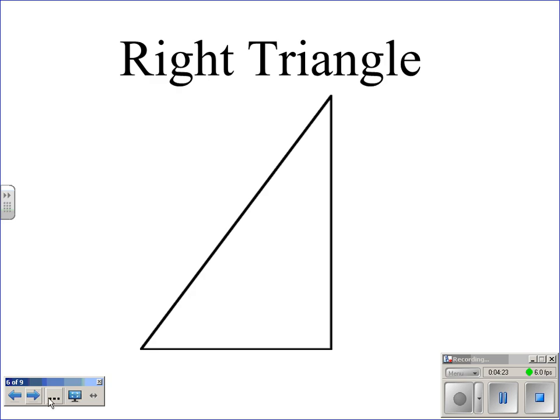Remember I said we can classify triangles based on their length, but we can also classify them based on their measure, the measure of their angle. So here we have something called a right triangle, and you should use the schema you have about right angles to figure out that a right triangle means that one of the angles is a right angle, and that is right there.